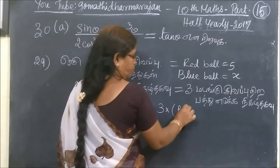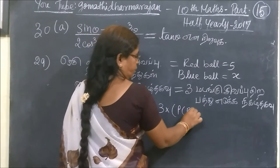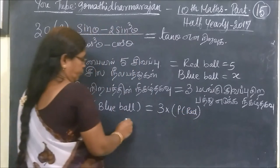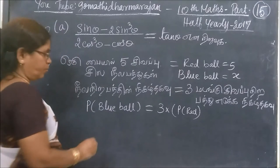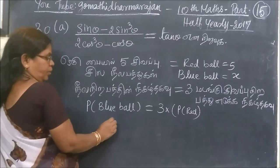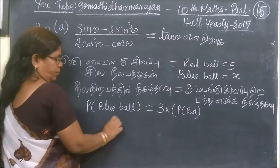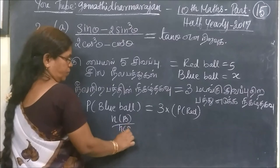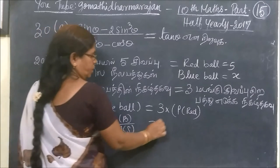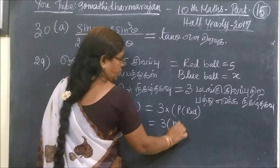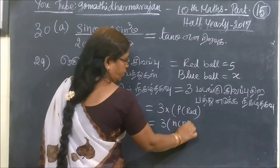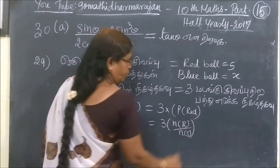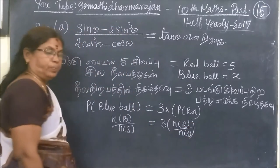Three times the probability of red. Probability of A: n(A) by n(S). So n(B) by n(S) is equal to 3 times red by S. S is the last one.